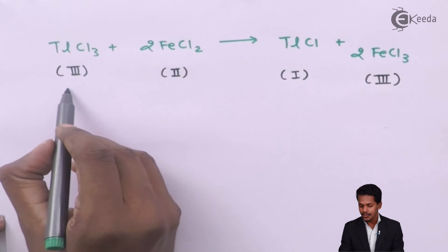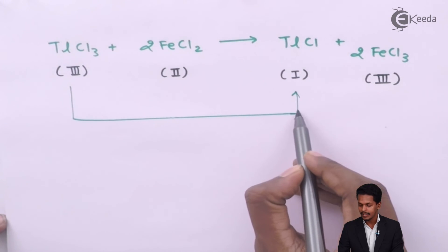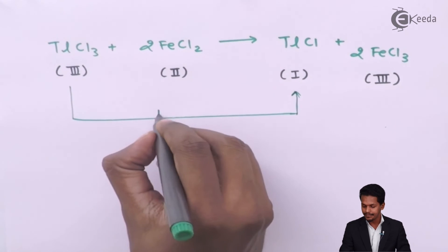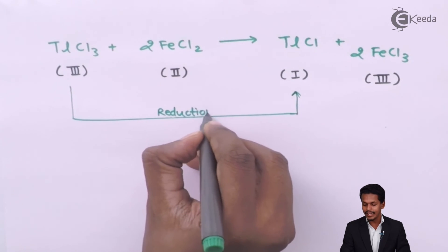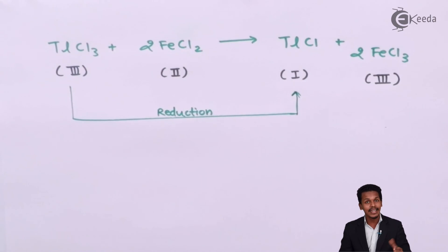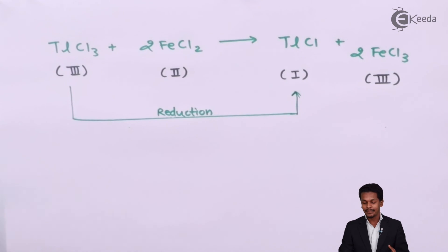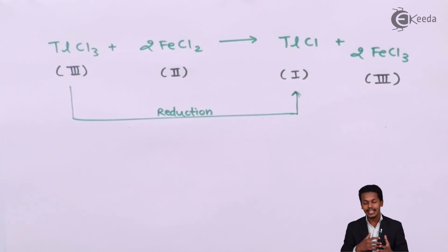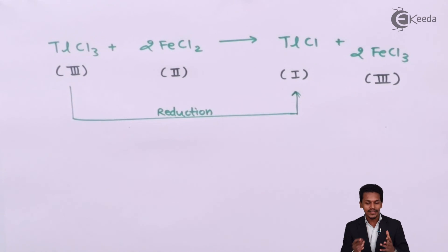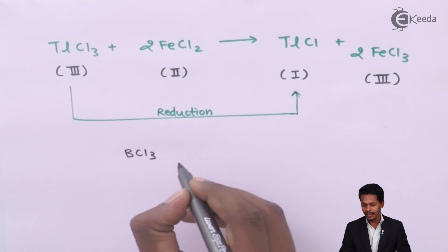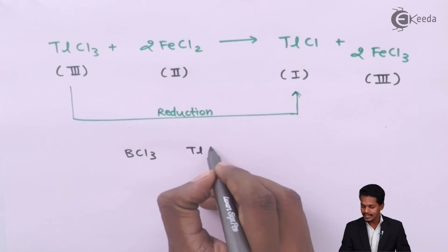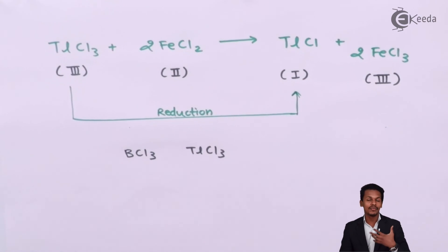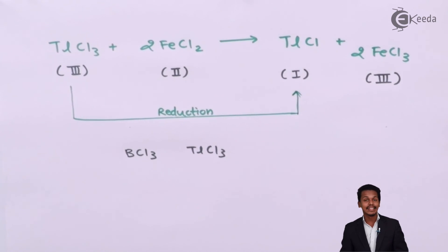Because Thallium readily converts from +3 to +1, TlCl₃ undergoes reduction by gaining electrons and thereby acts like the best oxidizing agent. So TlCl₃ acts like a good oxidizing agent. We can also say that BCl₃ is more stable compared to TlCl₃.